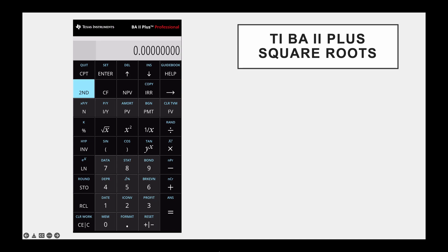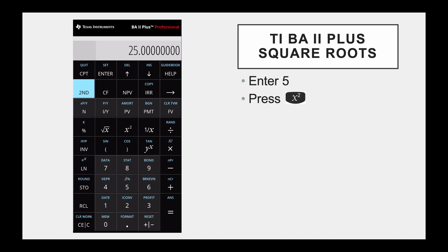We're going to go ahead and do square roots. First, we are going to enter 5, then press the x squared — that gives us 25. Now, with 25 displayed, we're going to press the x with the root, and that gives us 5.